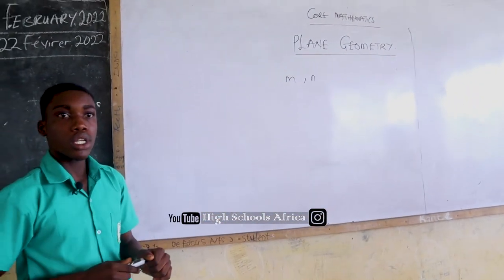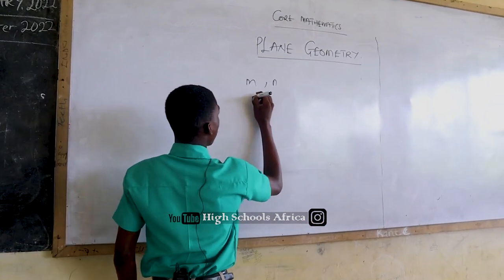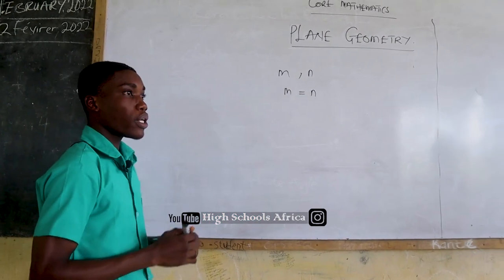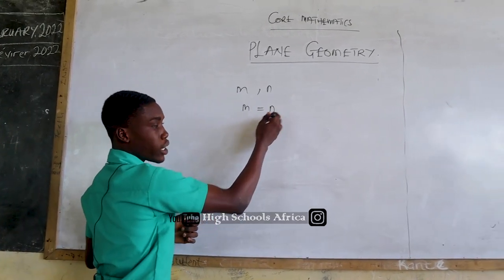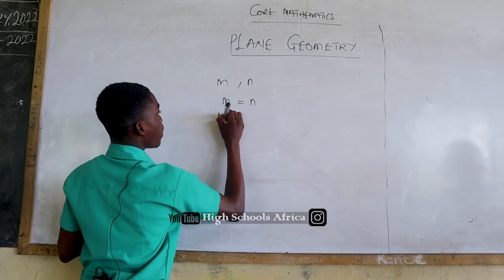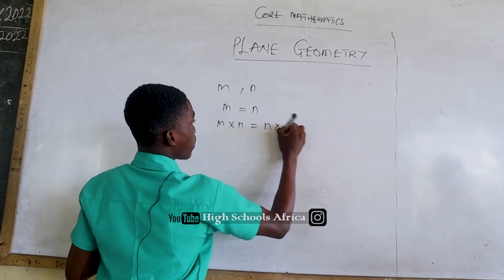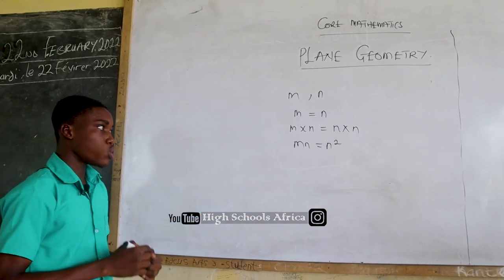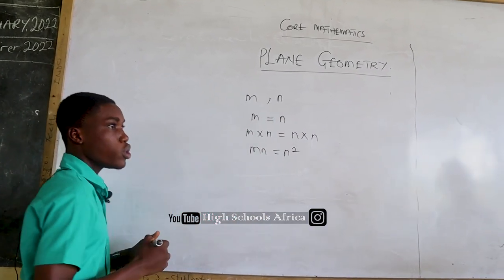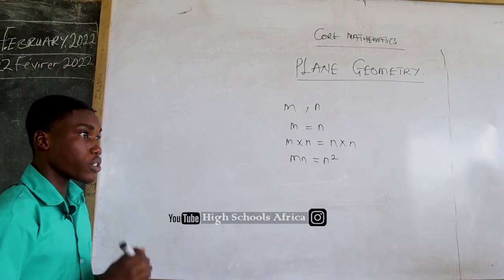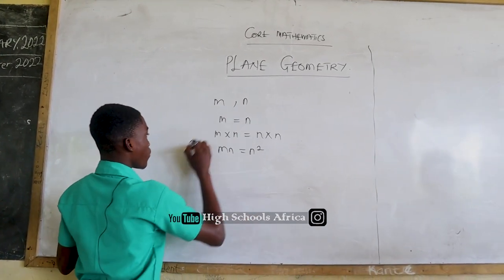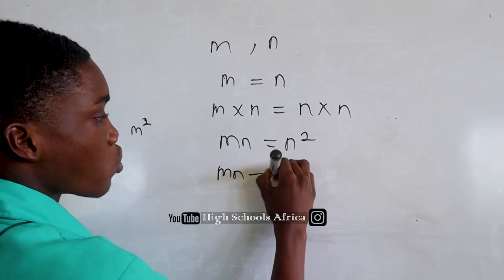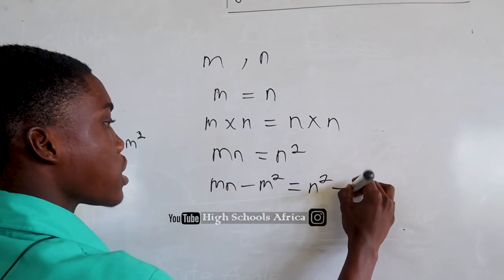The first thing we are going to do is equate the two variables: M is equal to N. The next step is to multiply both sides by N, so you have M times N is equal to N times N, which gives us MN is equal to N squared. Then we square M and subtract it from both sides, giving us MN minus M squared is equal to N squared minus M squared.